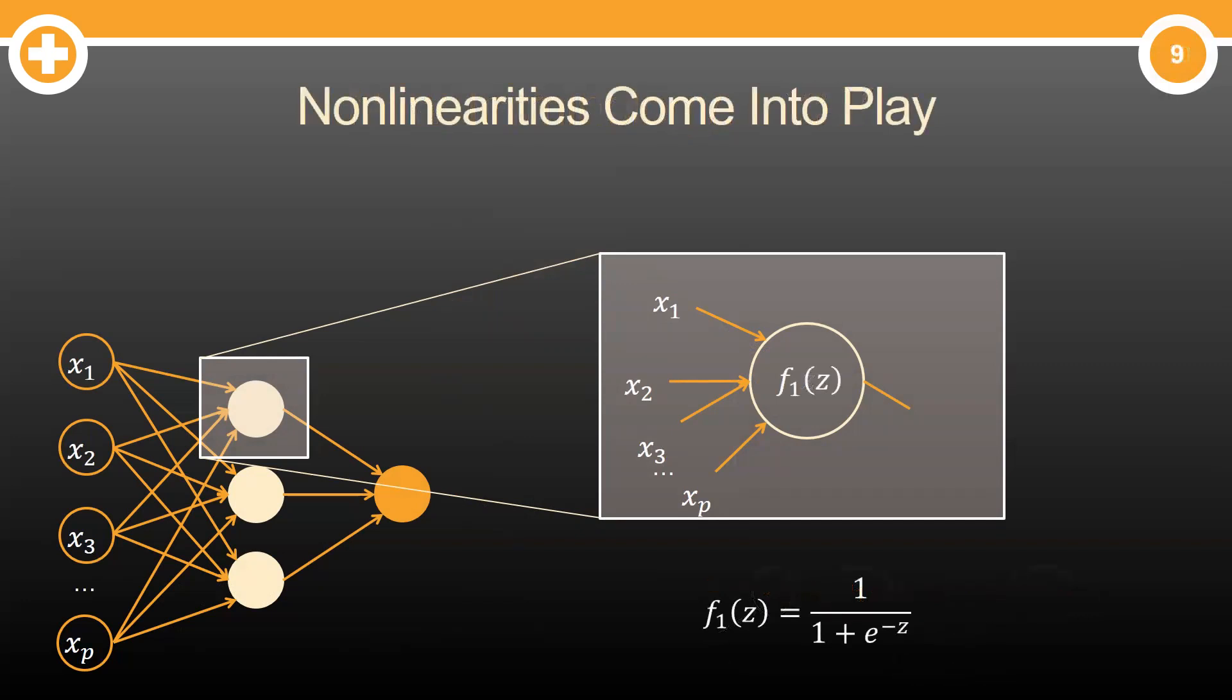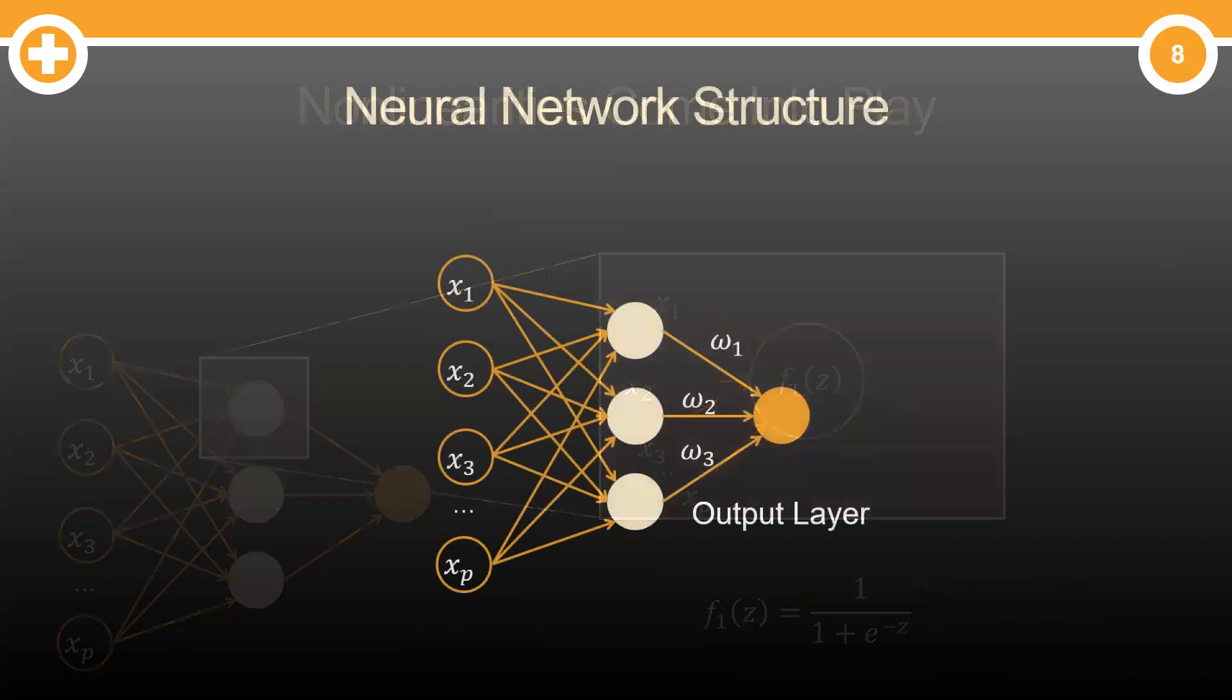But now, we apply a nonlinear transformation on this linear combination Z. Here, we use the logistic function as our nonlinear transformation. But there are a variety of different ones that you can use here. Do this for all of the nodes in the hidden layer.